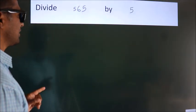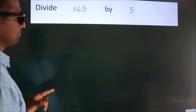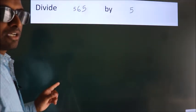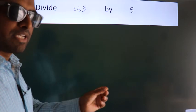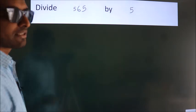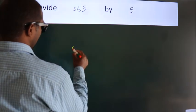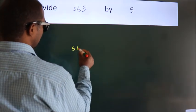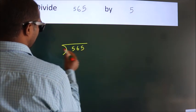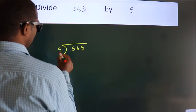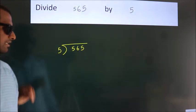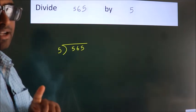Divide 565 by 5. To do this division, we should frame it in this way: 565 here, 5 here. This is your step 1.